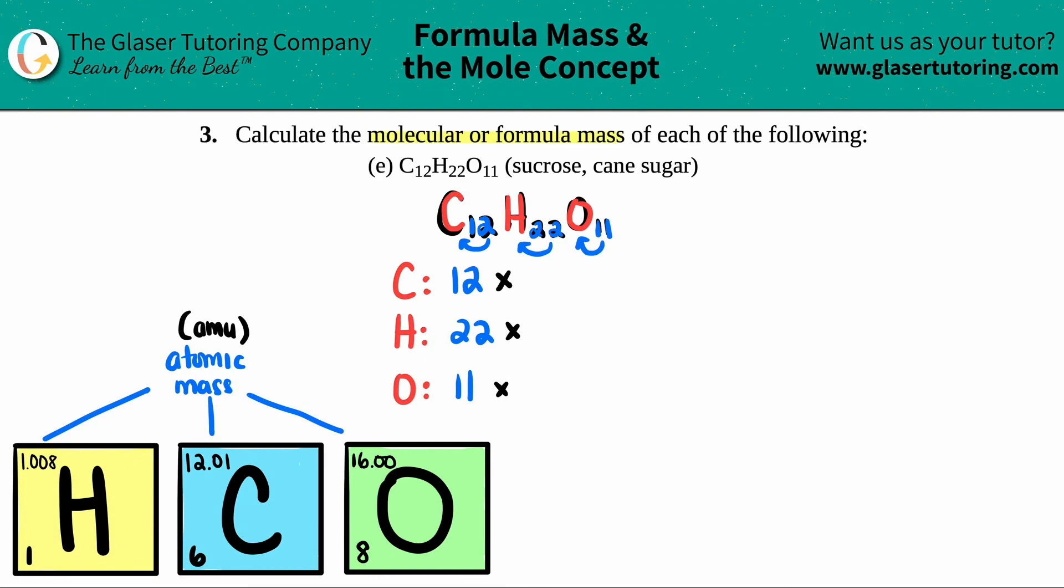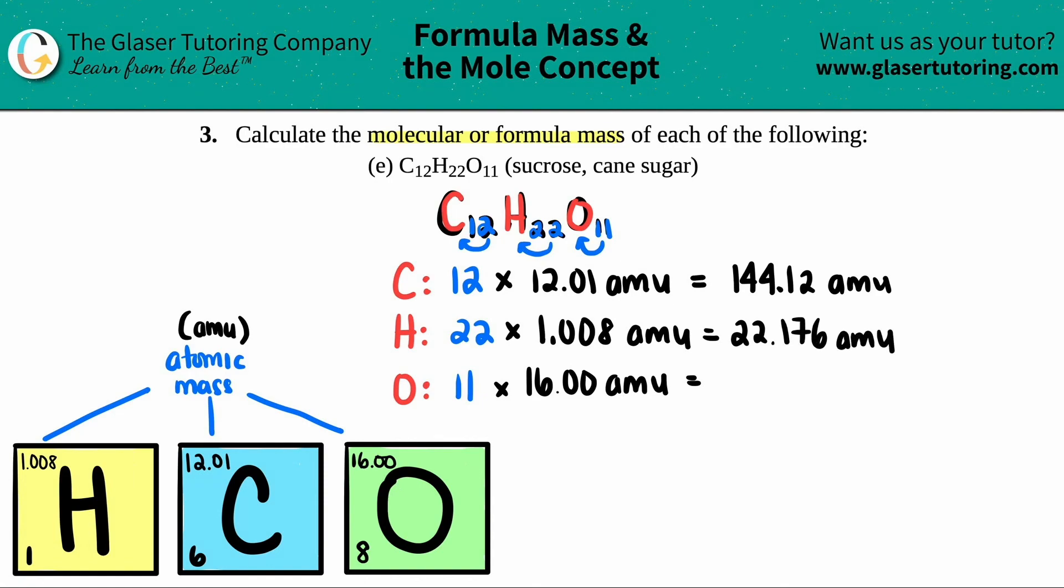So all I'm going to do is I'm just going to take my mass numbers and multiply by how many I have. So for carbon, each carbon is 12.01 AMU. Each hydrogen is 1.008 AMU. And then each oxygen is 16. So let's find out what this is. 12 times 12.01, that's 144.12 AMU. We have 22 times 1.008. So that's 22.176 AMU. And then we have 11 times 16, which is 176.00 AMU.